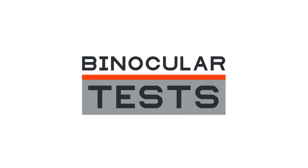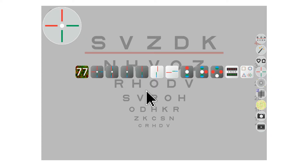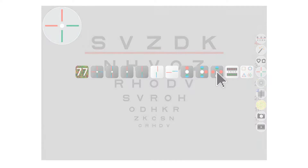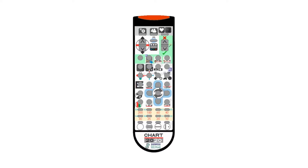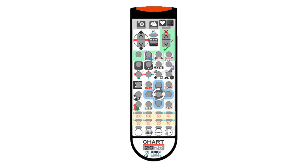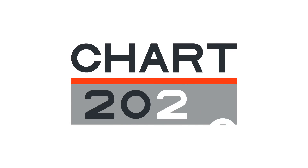Assess binocular vision with a range of dynamic targets. Chart 2020 — the gold standard in vision testing. Control Chart 2020 with a conventional infrared remote, or use our apps on your phone or tablet. Visit chart2020.com for more information.